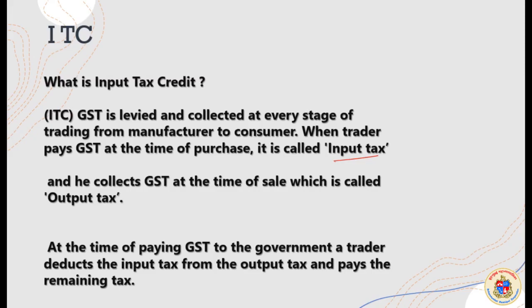At the time of paying GST to the government, the output tax is what the trader collects from customers. A trader deducts the input tax — already paid by the manufacturer or previous seller — from the output tax, and pays only the remaining amount. This is what is called input tax credit. So in the watch example, each trader paid exactly 12 rupees because every trader made a profit of 100 rupees.